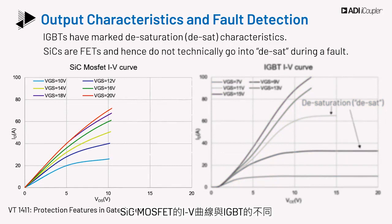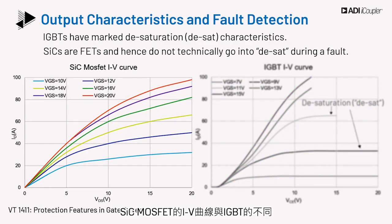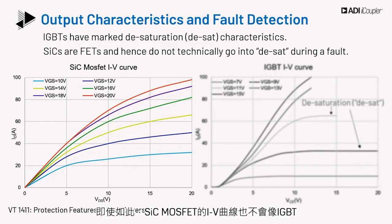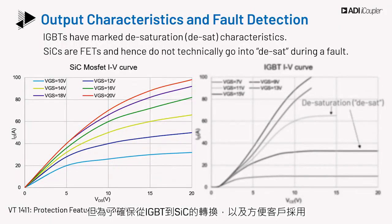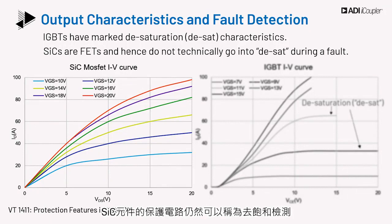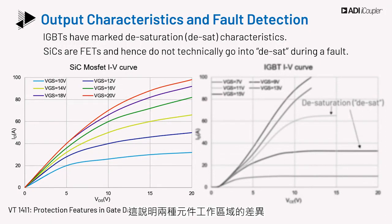The SiC MOSFET IV curve is different from that of the IGBT. SiC devices are MOSFETs and hence do not go into desaturation; the IV curve shows no flat desaturation region as in IGBTs. But to ensure transition from IGBT to SiC and for ease of adaptability for customers, protection circuits for SiC devices may still be referred to as desaturation detection. The various regions of operation illustrate this difference, as the saturation region of the IGBT is analogous to the ohmic or triode region of the MOSFET.